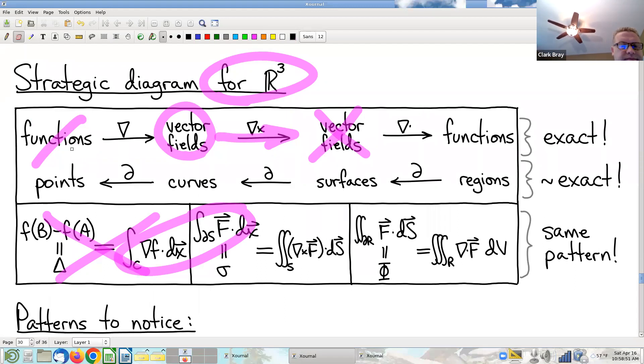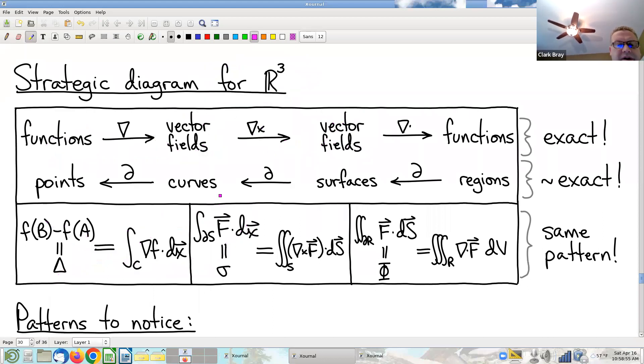So there's our curl. It's not zero. Being as we got not zero there, that means there is no anti-gradient function. That means the fundamental theorem of line integrals is off the table. Don't waste your time trying to find an anti-gradient.